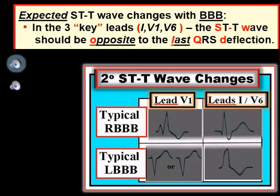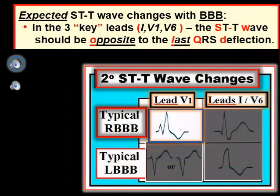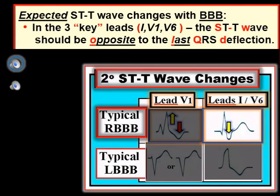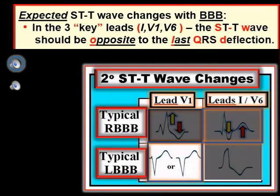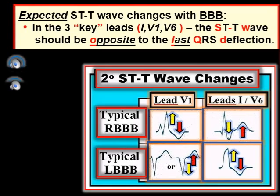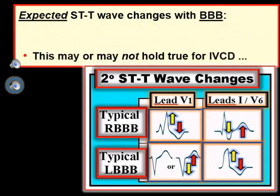A picture is worth a thousand words. With typical right bundle branch block, the last QRS deflection in lead V1 is the upright R prime, so we expect ST-T wave depression in lead V1. In leads 1 and V6, the last QRS deflection is the wide terminal S wave, so we expect an upright T wave if the only thing going on is right bundle branch block. This relationship may change if there is ischemia or infarction. On the other hand, with typical left bundle branch block, the last QRS deflection in lead V1 is down, so the T wave should normally be upright. And in leads 1 and V6, there is a monophasic upright R wave, so we expect the ST-T wave to be negative. Note this general rule does not necessarily hold true for IVCD, in which case it may be more difficult to predict the meaning of ST-T wave changes.